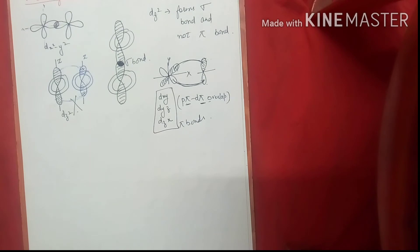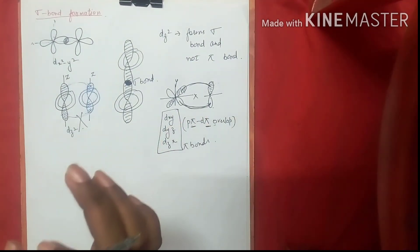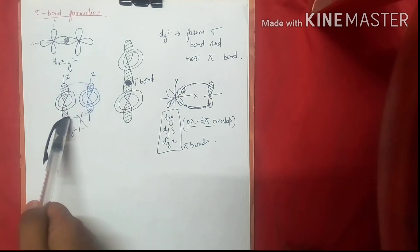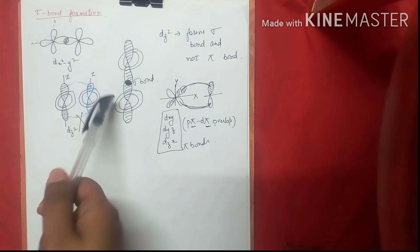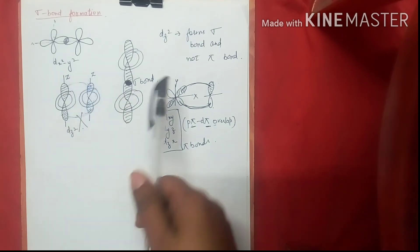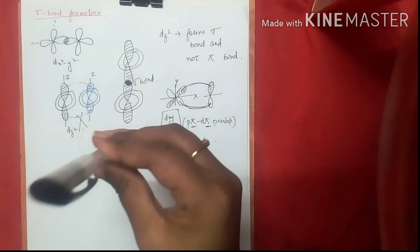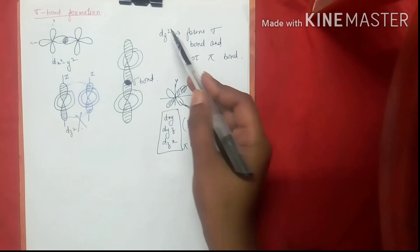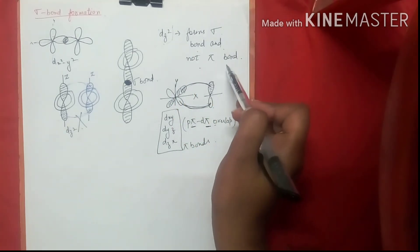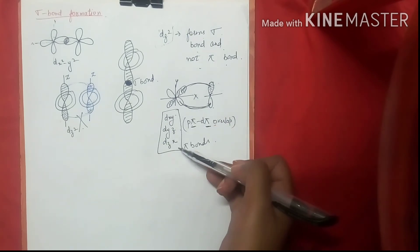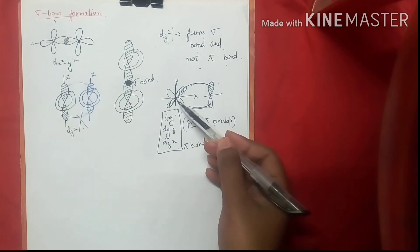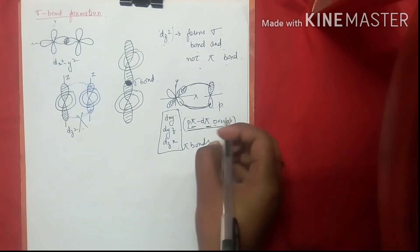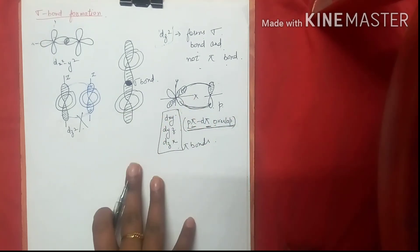So d_xy, d_yz, and d_zx — they lead to the formation of Pi bonds through p-pi d-pi overlap. To summarize: s orbitals form Sigma bonds effectively; d_(x²−y²) forms Sigma bonds; d_z² forms Sigma bonds but not Pi bonds; and d_xy, d_yz, d_zx form Pi bonds via sideways overlap with p orbitals.